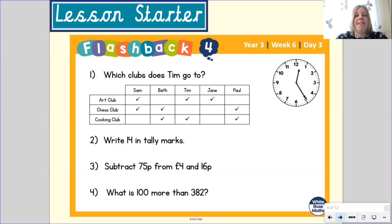Question 1: look at the table — which clubs does Tim go to? Question 2: write 14 in tally marks. Question 3: subtract 75p from £4.16. Remember back to our unit of work on Monday and use the strategy that you feel most confident in using to find how much money is left. Question 4: what is 100 more than 382?